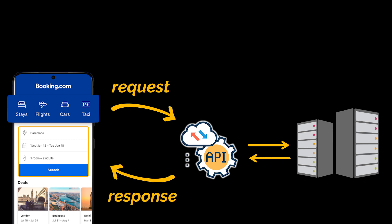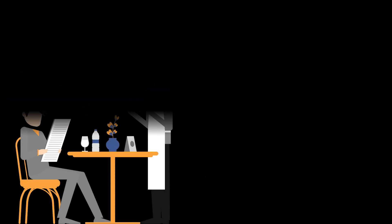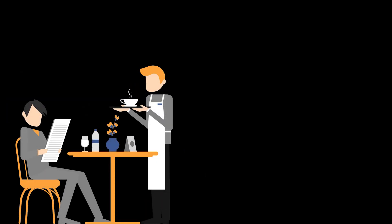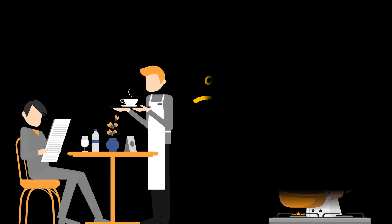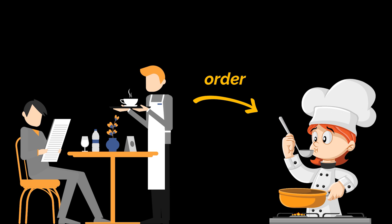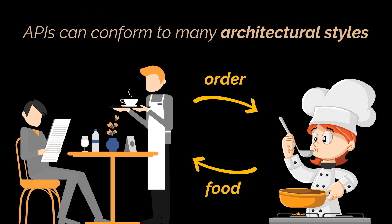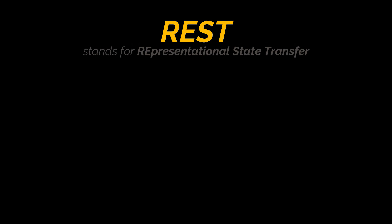That API will return a result you can deal with and render on your browser or mobile application. That's what APIs are — they're basically the waiters of our restaurants who, as a first step, take clients' requests and send them to the server or chef to be processed, and then return with the response or food we are expecting. Now, APIs can conform to many architectural styles, and by far the most popular is the REST architectural style.